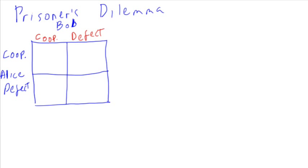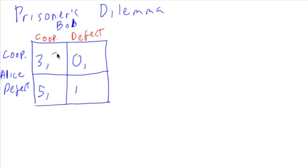The payoffs are as follows: three, five, zero, one — and similarly for Bob: three, zero, five, and one.